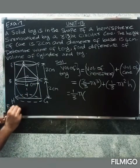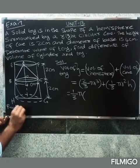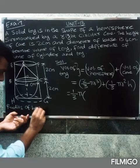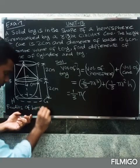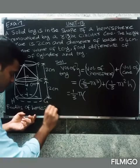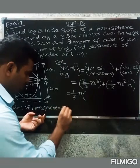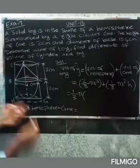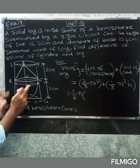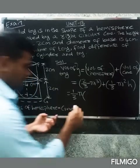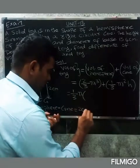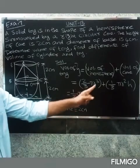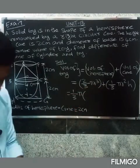The radius of the hemisphere equals the radius of the cone. Since radius is common, we take r² as a common factor. So total diameter is 4 cm, radius is 2 cm.